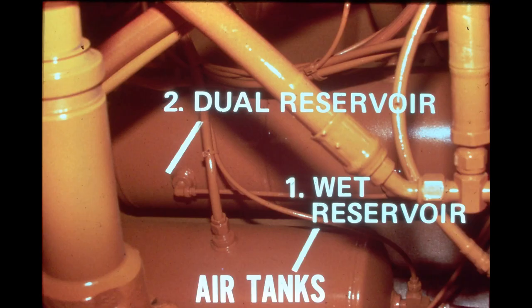Three air reservoirs located in the front frame store the pressurized air from the compressor. The tanks are mounted above the front axle. The main, or wet reservoir, receives all the air from the compressor. This reservoir has a safety valve which limits the air pressure in the tank at 150 PSI.